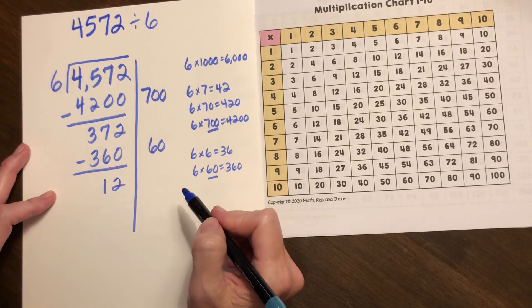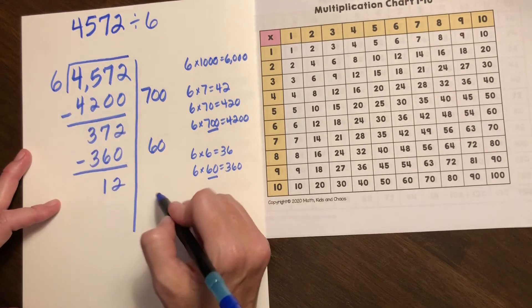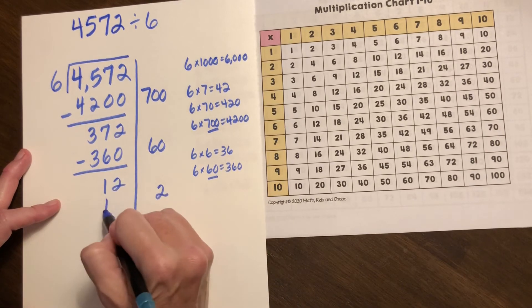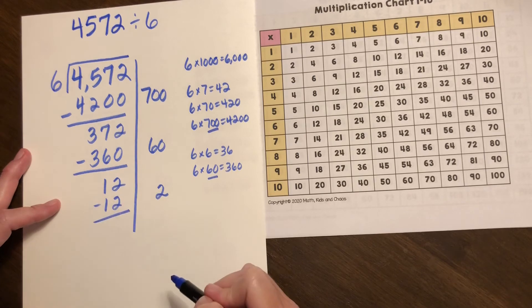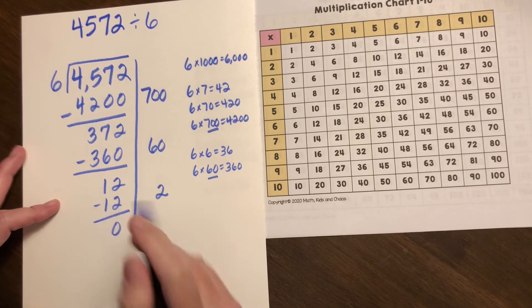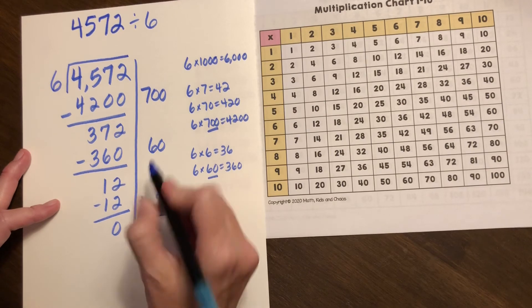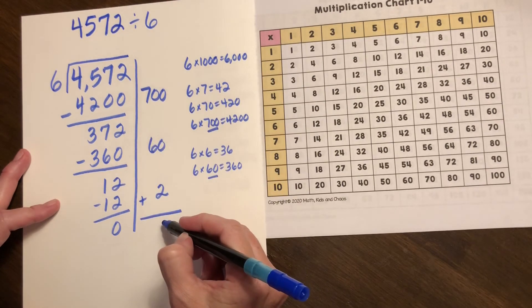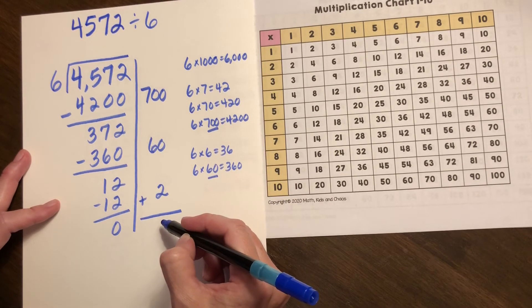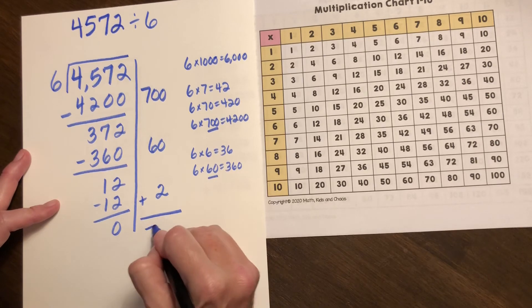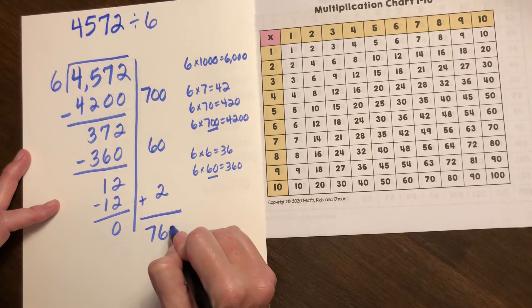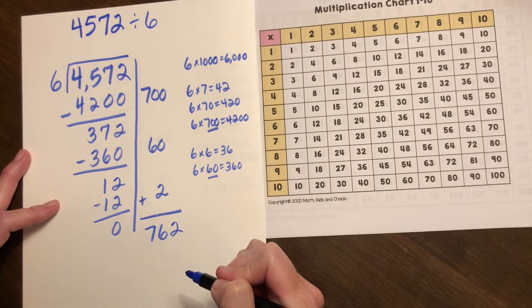That leaves me with 12 left to group and I know that we can create two groups of six and group the last 12. So just as we do in the arrays we have our partial quotients, we will then take the sum of those partial quotients to get a final answer of 762.